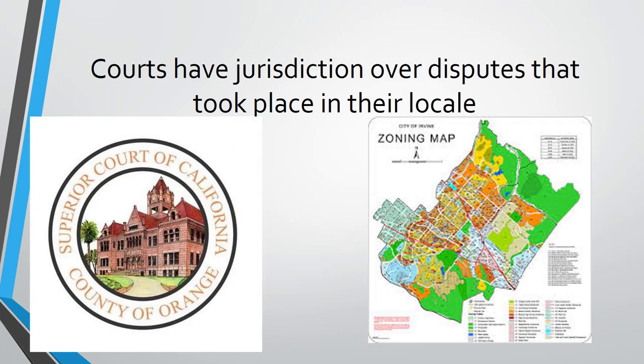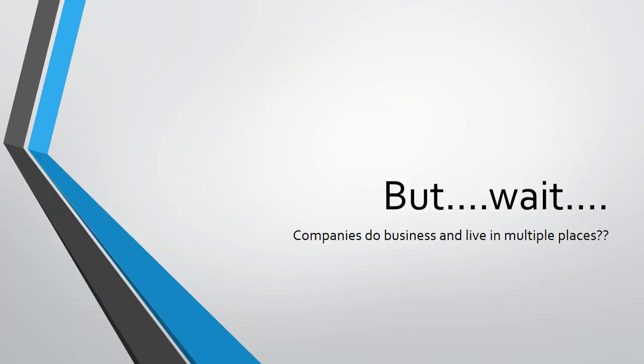Courts have jurisdiction over disputes that happened in their county. So if a dispute happens in Irvine, which is in the County of Orange, and the breach of contract claim happened in Orange County, the Superior Courts will have jurisdiction. You're located here, the dispute happened here, you live and work here, your business is here, you have a subsidiary here — that gives a sense of how courts determine jurisdiction.